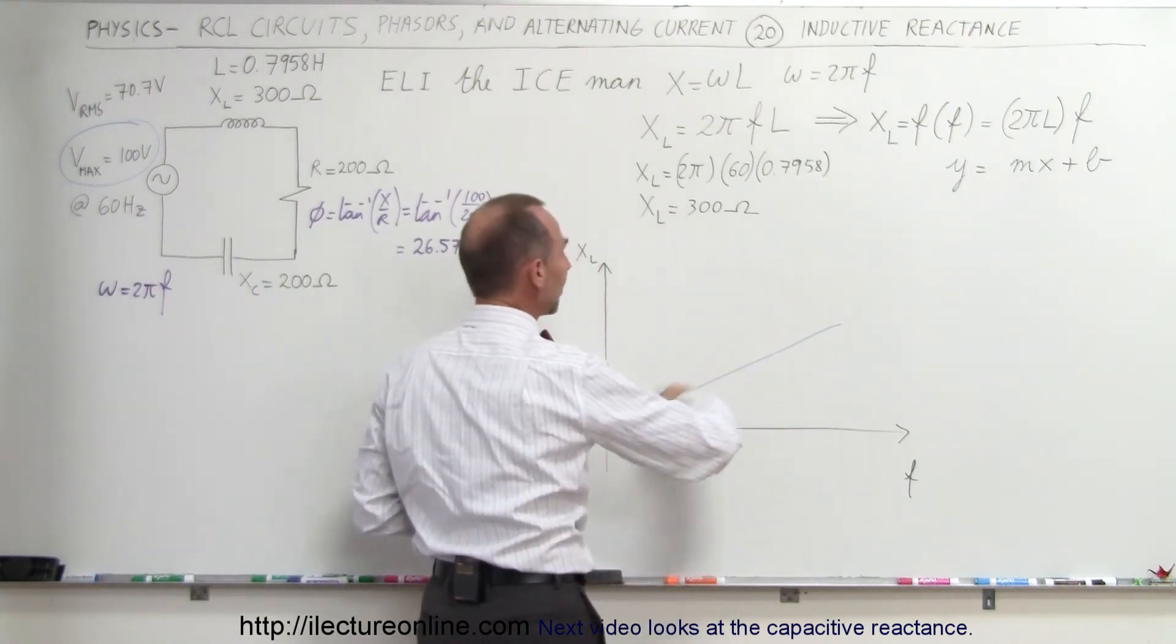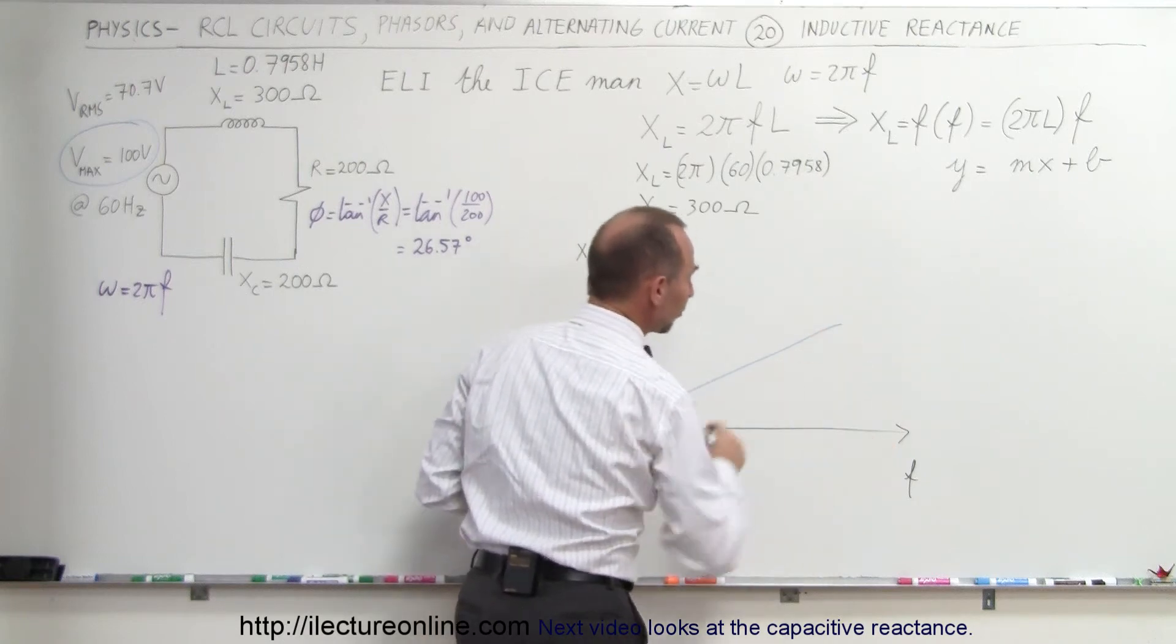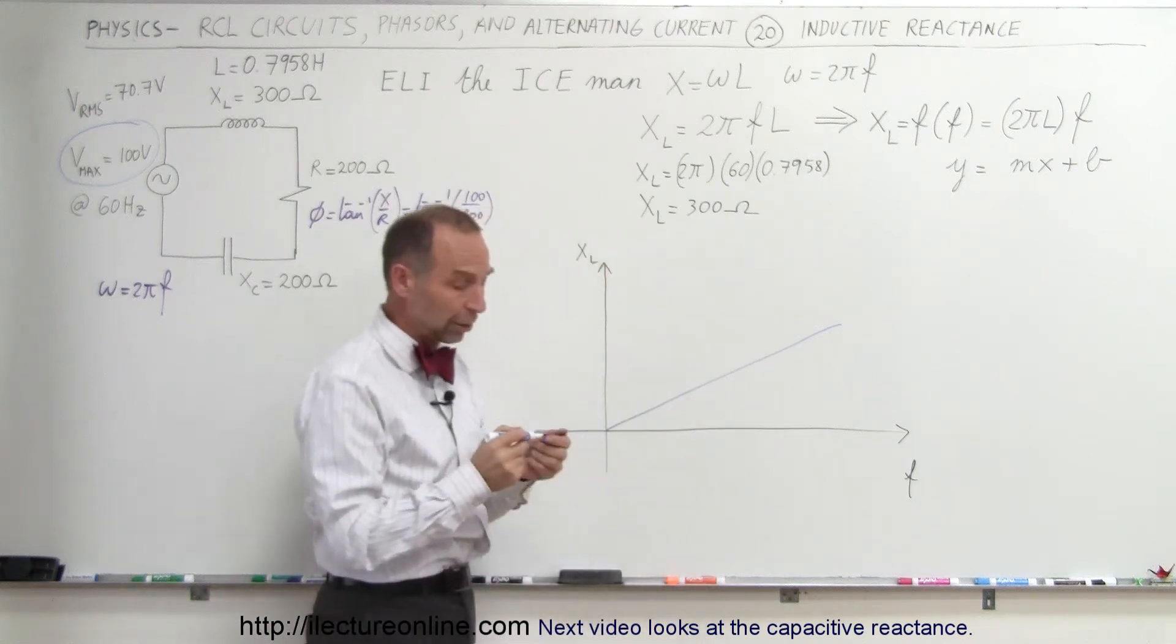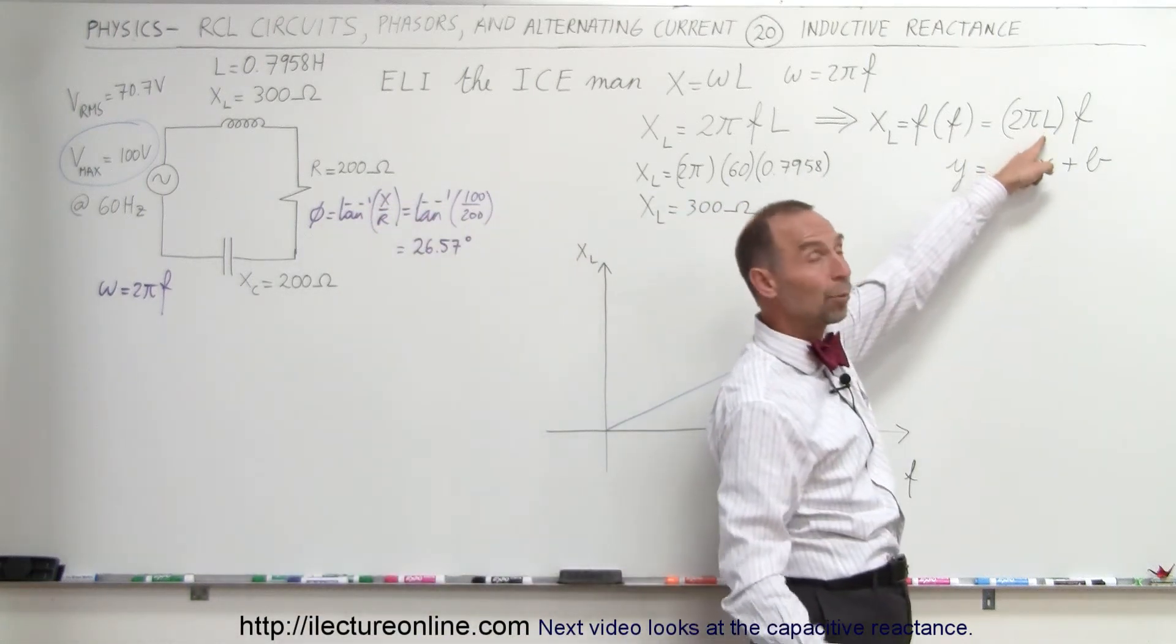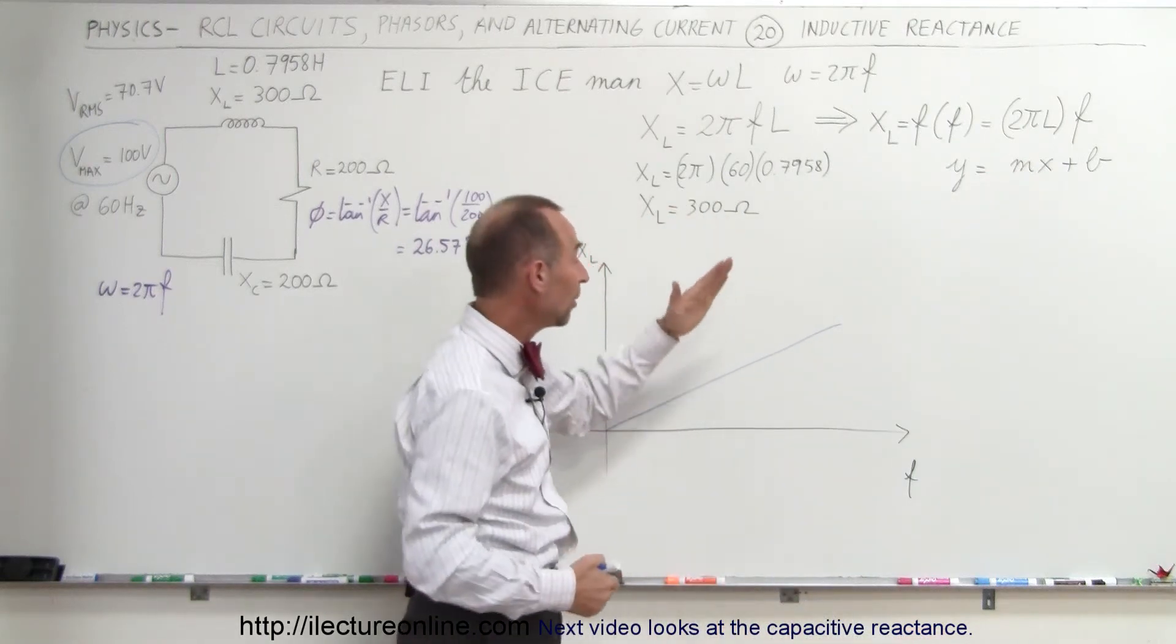So this is actually a representation of the inductance XL as a function of the frequency. As the frequency goes up, the reactance goes up as well. Notice that if we have a larger inductor with more inductance, then the slope will be steeper. That means as the frequency goes up, the reactance goes up as well.